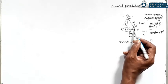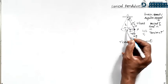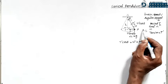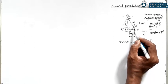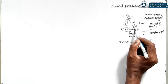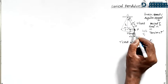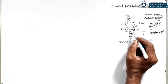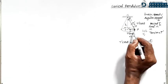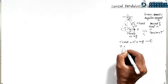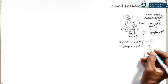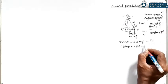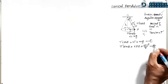So T' cos theta = mg. This is equation number 1. The horizontal component is T' sin theta, directed from the bob toward the center of the circular path. This is an unbalanced force, which means it acts as the centripetal force. So T' sin theta equals centripetal force, which in terms of linear speed is mv²/r. This is equation number 2.